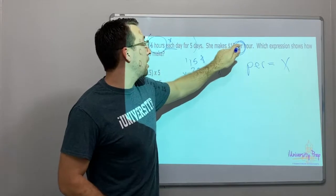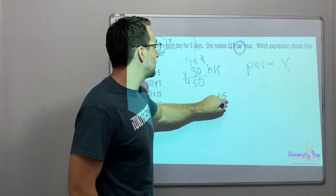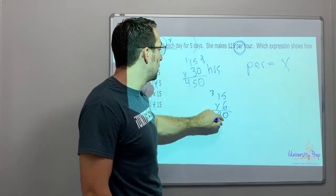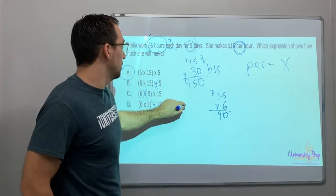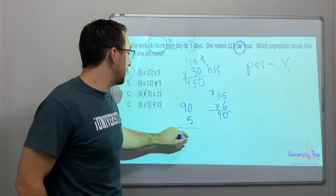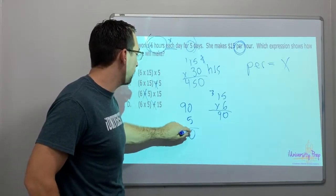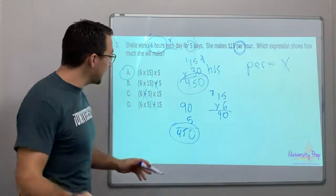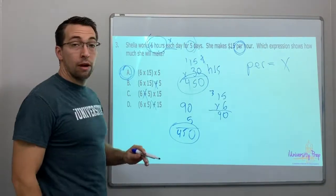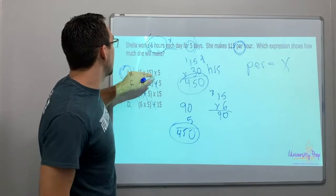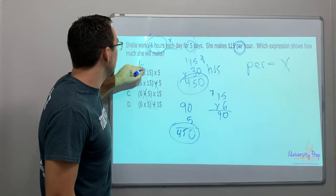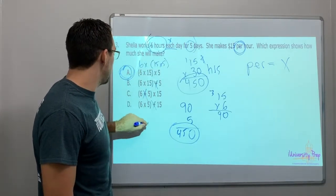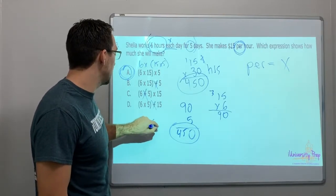Look — if she worked six hours at fifteen dollars per hour, fifteen times six is ninety. Ninety times five: zero, then nine times five is forty-five — that's four hundred fifty. Wait, let me solve it the correct way: six times fifteen is ninety, ninety times five is four hundred fifty. Remember the associative property of multiplication: six times fifteen times five is the same as fifteen times six times five.